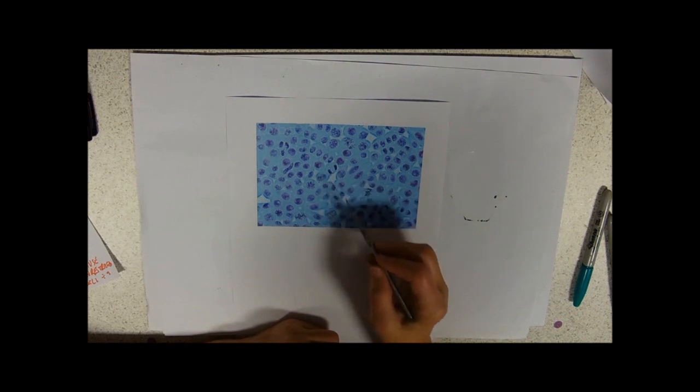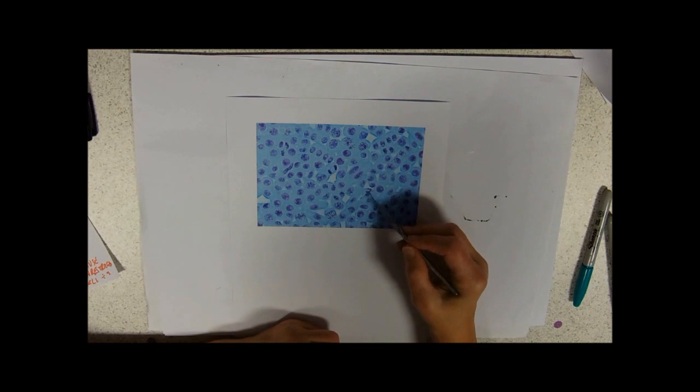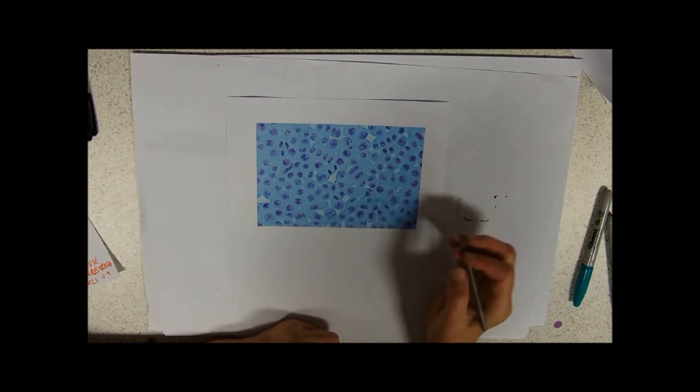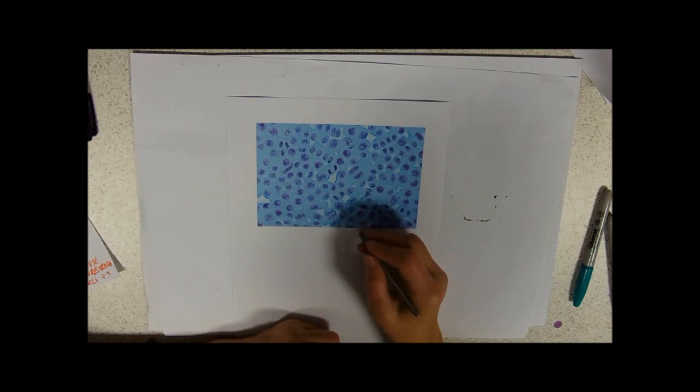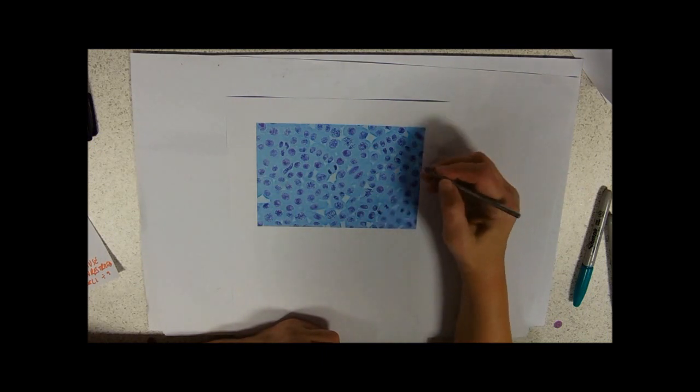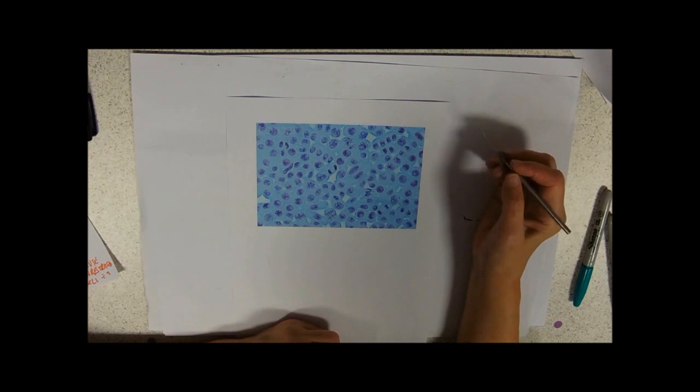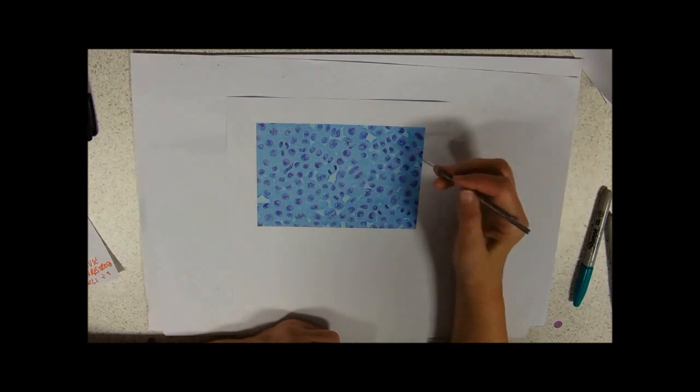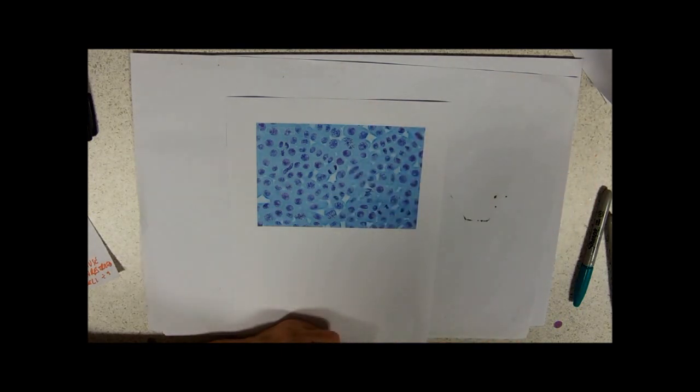So, prophase, you can start to see the chromosomes appearing. Metaphase looks like a squash spider in the middle. And here's another one. Anaphase, they start to pull apart. Later anaphase, still pulling apart. And in telophase, they look like two nuclei inside of one cell. So, you need to be able to recognise those main phases.